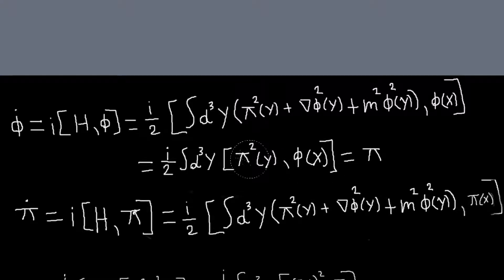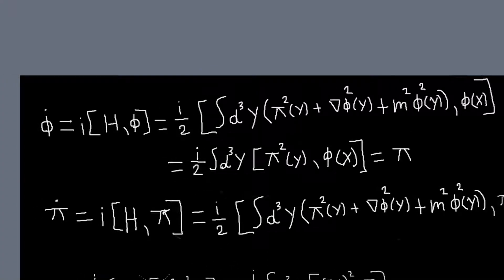So I'll get basically a minus 2i delta x minus y, and so I'll just be left with a pi of x left over. So that one's easy to do. And then we can compute pi dot as well.